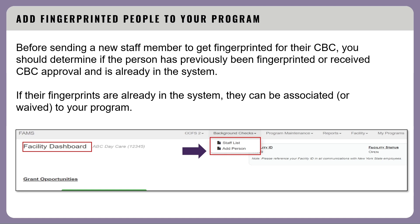Before sending the new staff member to get fingerprinted for their CBC, you should determine if the person has previously been fingerprinted or received CBC approval and is already in the system. Once an individual has been fingerprinted, their fingerprints can be associated or matched to another child care program within New York State. The approval is valid for up to five years unless there is a break in employment from working in any program for more than 180 days. You can submit a request to have their fingerprints associated with your program by using the add person option, which used to be called 'request a waiver.'